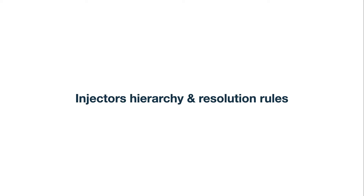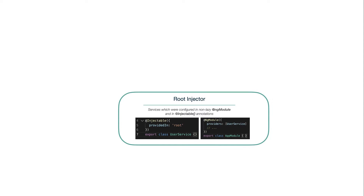When Angular starts, it creates a root injector where all services are registered — those provided via the Injectable annotation, and all services provided in NgModule's providers property, if those modules are not lazy loaded. Angular recursively goes through all modules used in the application and creates instances for provided services in the root injector. So if you thought that providing a service in some module makes it available only in the scope of that module, that is actually wrong — if you provide a service in an eagerly loaded module, it will be added to the root injector, making it available across the whole application.